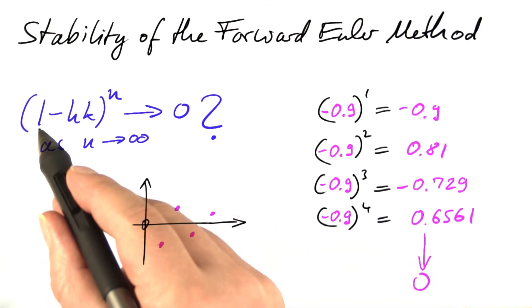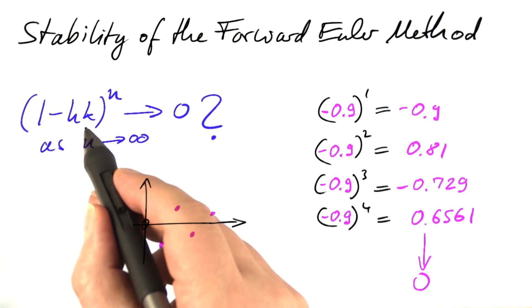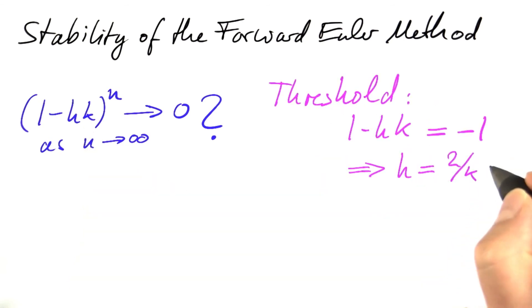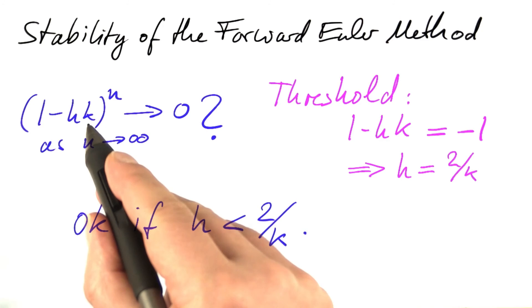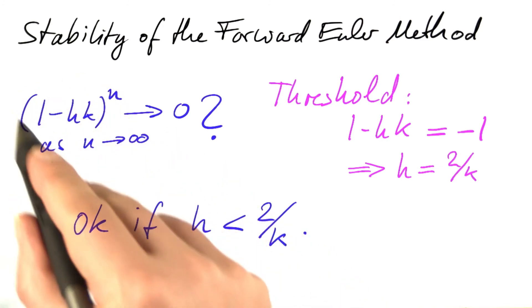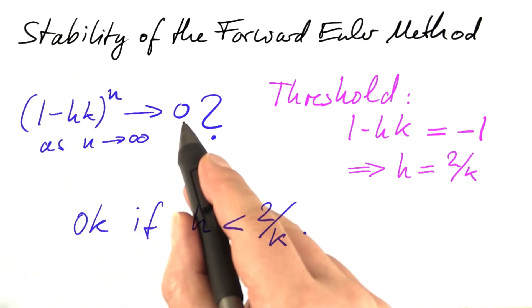So the threshold would be that 1 minus hk, this inner expression, equals minus 1. The threshold is 2 over k. So the condition is that h is smaller than 2 over k, for this power to decay to zero and for the forward Euler method to be stable. That's not bad. It's terrible.